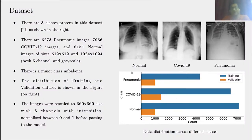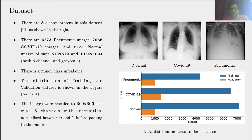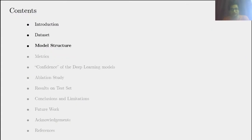Before passing the data to the model, we resized the images to 360 by 360 pixels with three channels. We also normalized the intensity between zero and one before passing to the model, since that is a standard way of training large datasets.